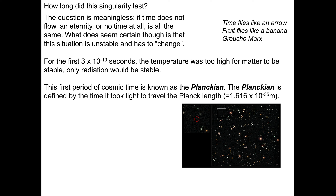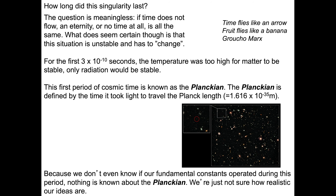The Planckian is defined by the time it took light to travel the Planck length — 1.616 times 10 to the minus 35 meters. This is called a God unit because it's a natural unit of time, not related to humans in any way. The Planckian lasted about 5.39 times 10 to the minus 44 seconds. Nothing is known about the Planckian — we have lots of ideas, but if physics doesn't operate the way we can observe today, we're a bit lost.